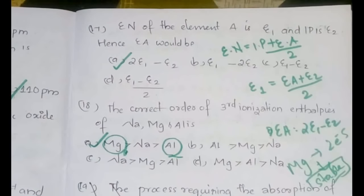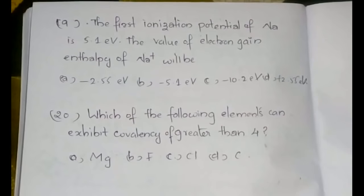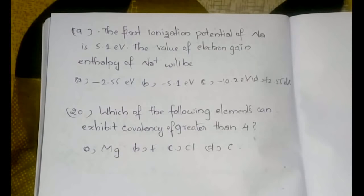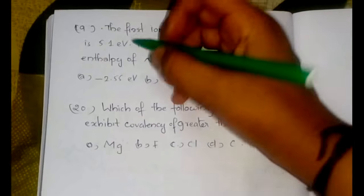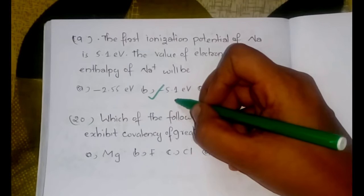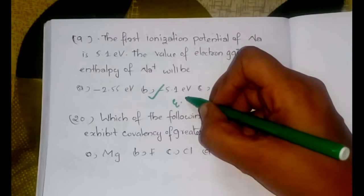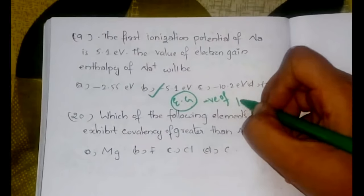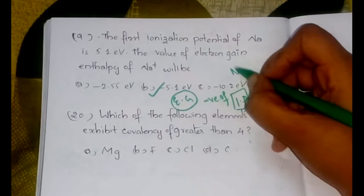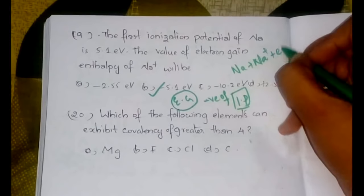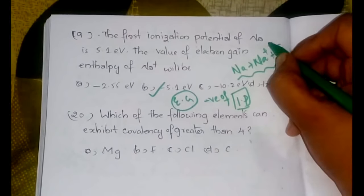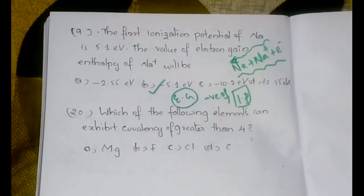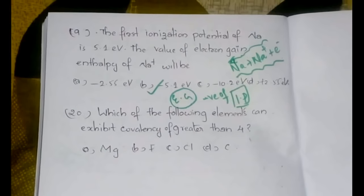The nineteenth question: the first ionization potential of sodium is 5.1 eV. The value of the electron gain enthalpy of Na+ would be? The answer is option B, −5.1 eV. The electron gain enthalpy is the reverse of the ionization potential of the parent atom — Na gives Na+ plus an electron, so the ionization potential and the electron gain enthalpy have opposite signs. Since one is 5.1, the other is −5.1.